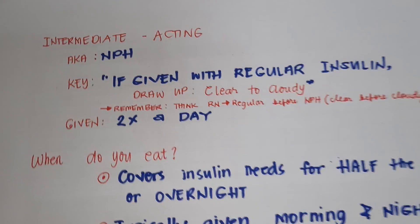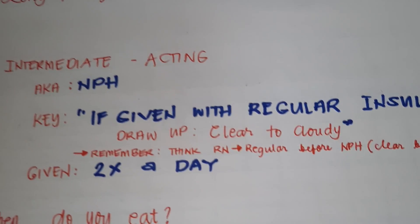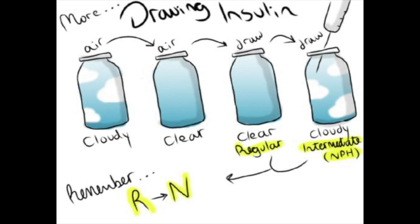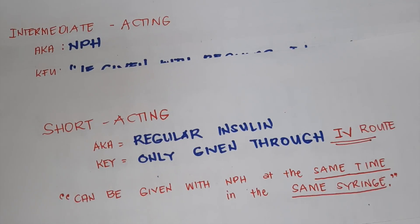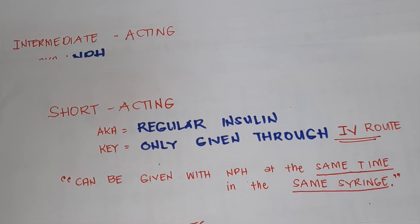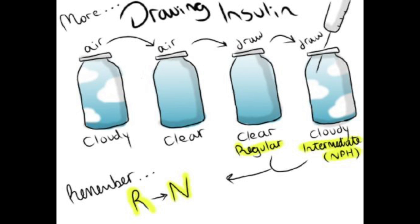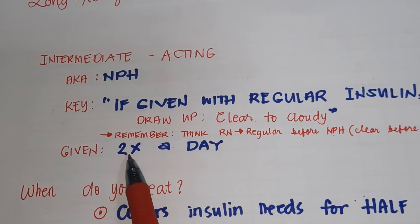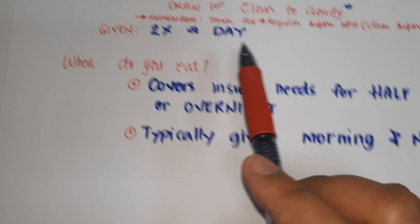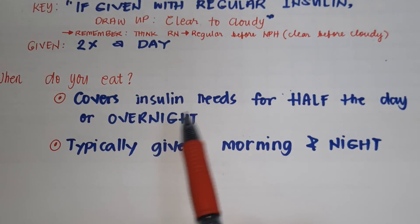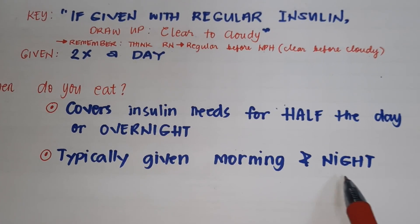Next is intermediate acting insulin, also known as NPH. The key point: if given with regular insulin, draw clear to cloudy. Think 'RN' — regular before NPH, clear before cloudy. NPH is given two times a day and covers insulin needs for half the day or overnight, typically given in the morning and at night.